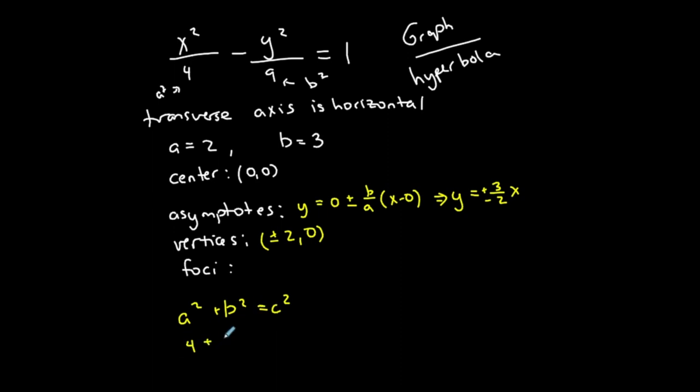So a squared is 4 plus b squared 9 is c squared. So c squared is 13. So c is equal to the square root of 13 plus or minus the square root of 13.